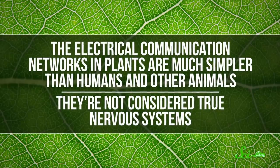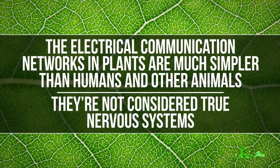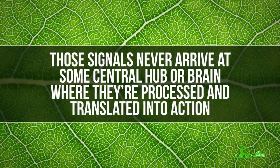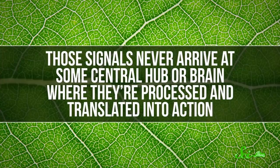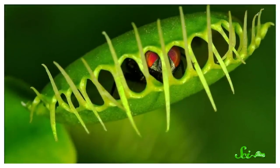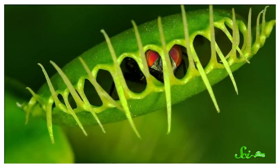But the electrical communication networks in plants are much simpler than in humans and other animals. They're not considered true nervous systems. Those signals never arrive at some central hub or brain, where they're processed and translated into action. So, even if we know that Venus flytraps can count and why, how it counts is still up for investigation.